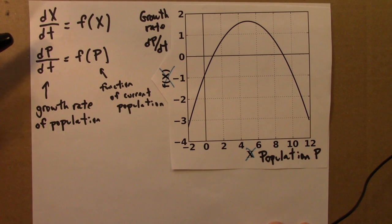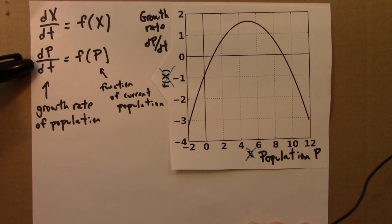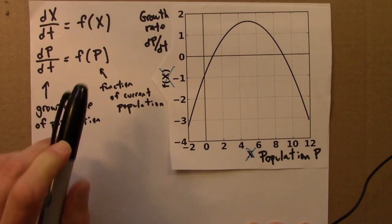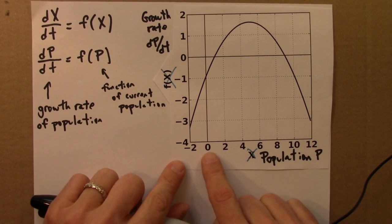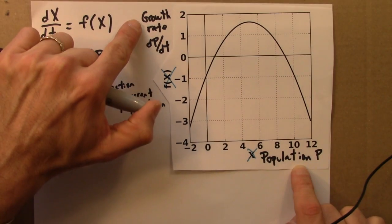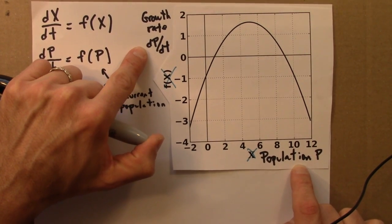But the idea is that we have a population that's changing in time, and this says the growth rate—if it's growing or shrinking how fast—is a function of the current population. So, then this graph, the axis here is population p, and then this is the growth rate, how the population is changing.